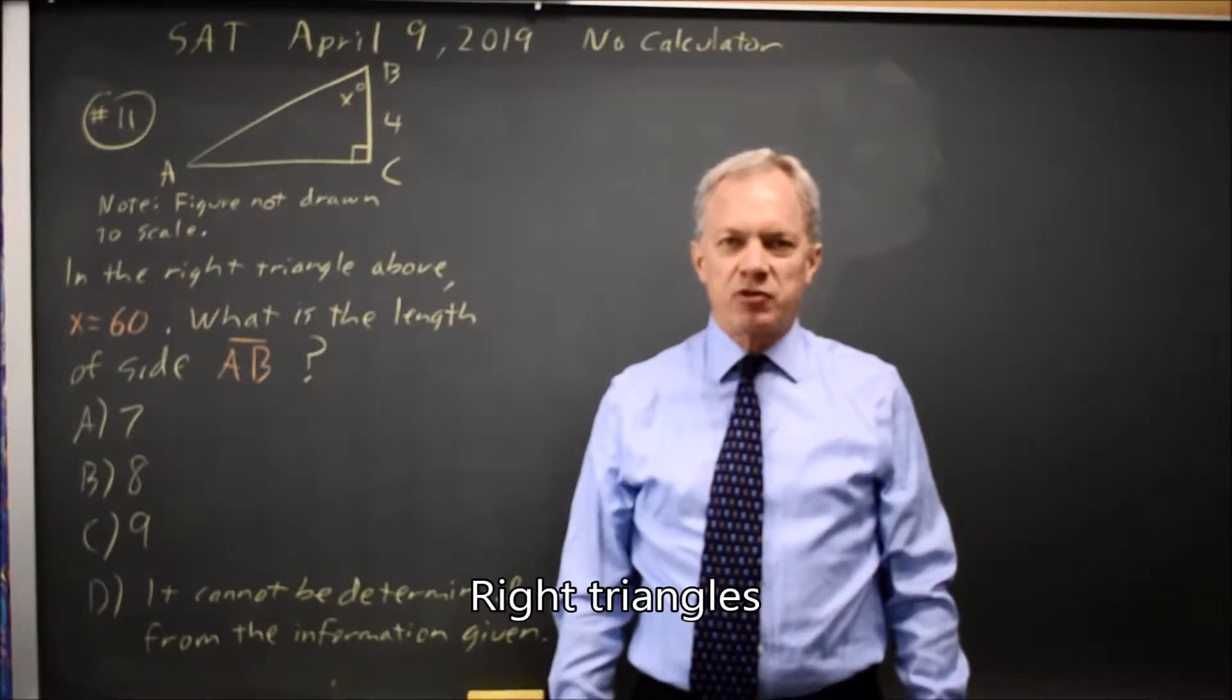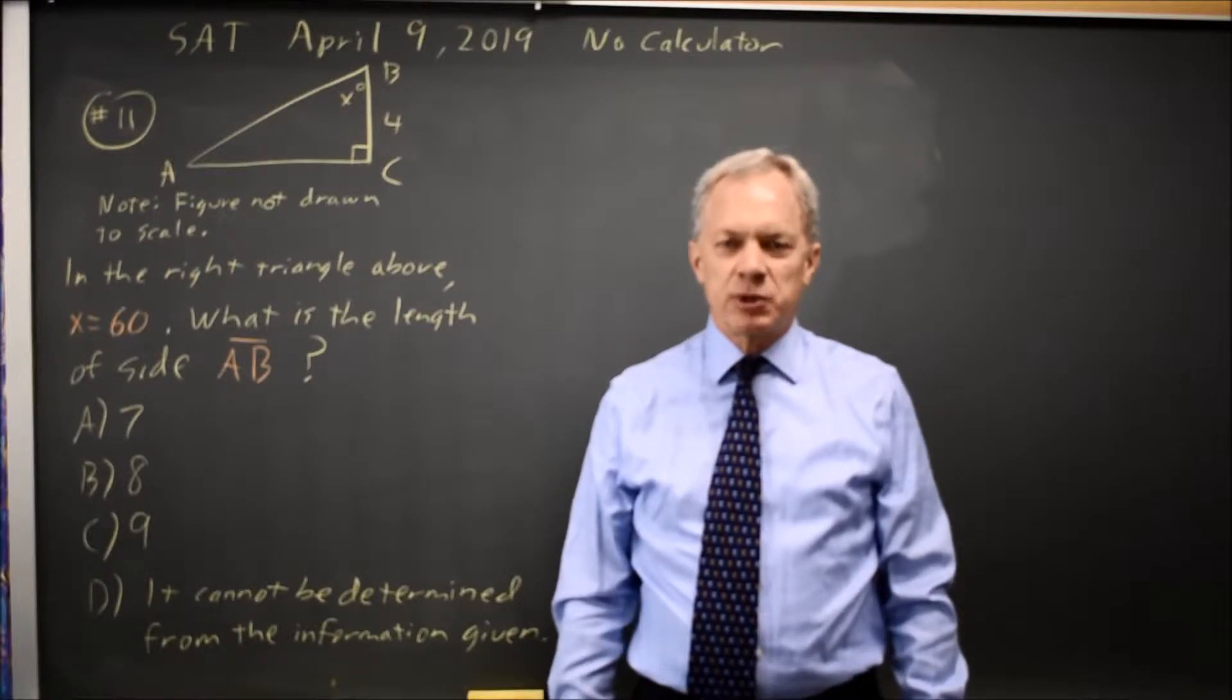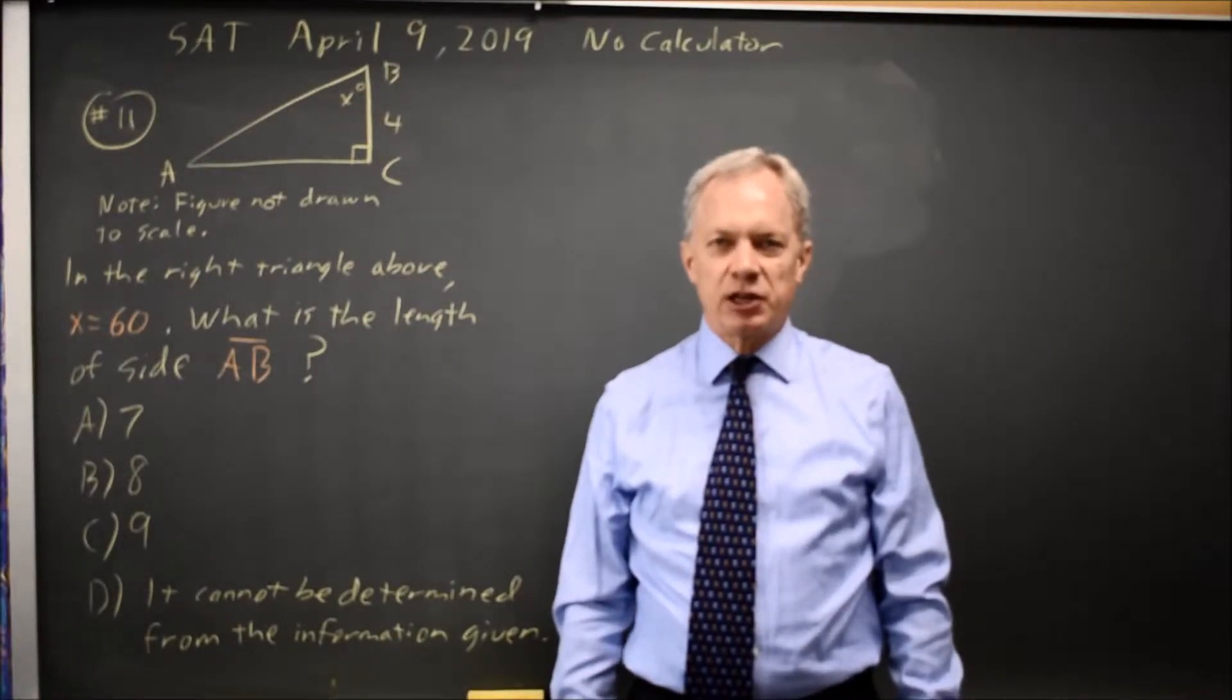This is non-calculator question number 11 from the April 2019 SAT. College Board gives us a triangle specifying a 60-degree angle and they ask for the length of another side.